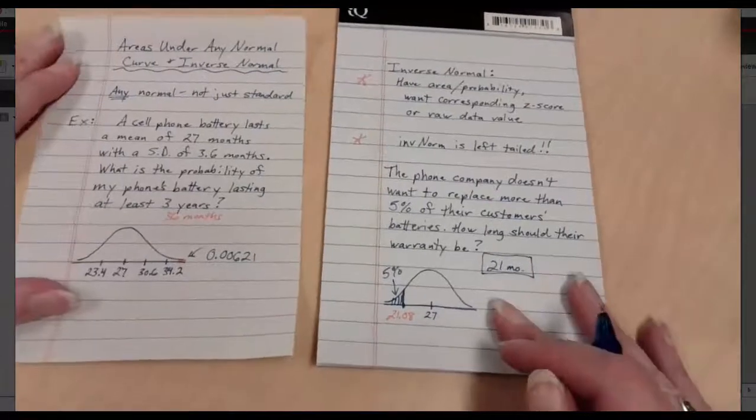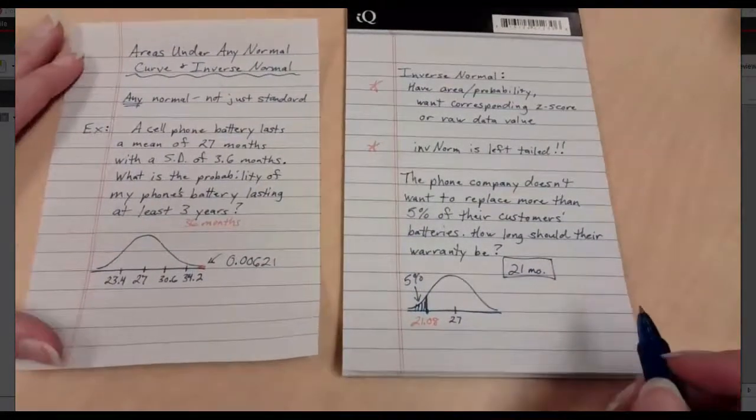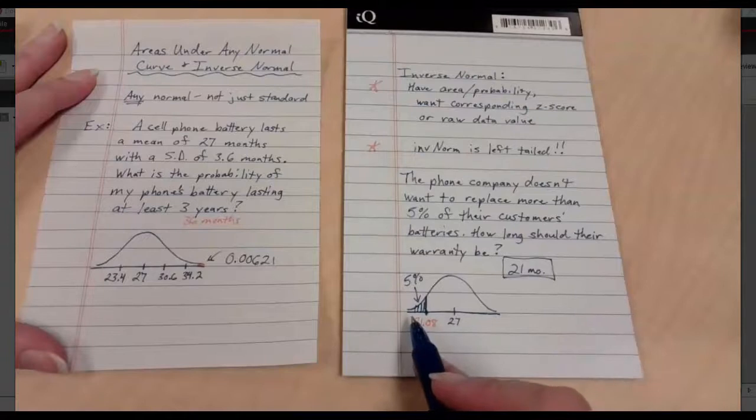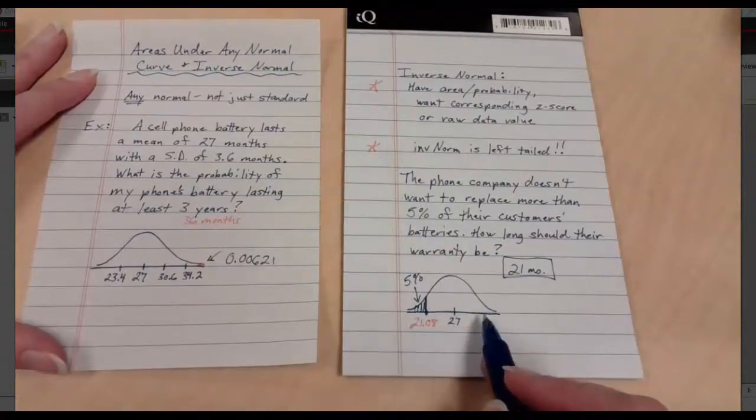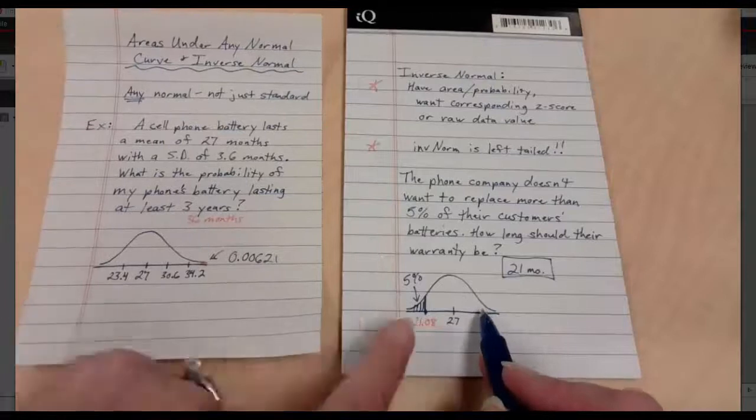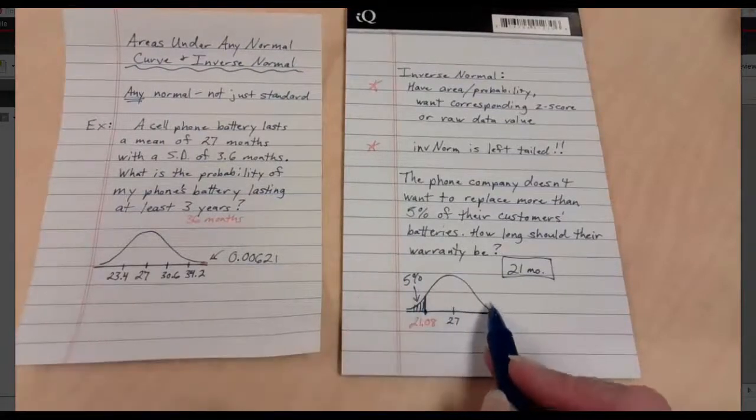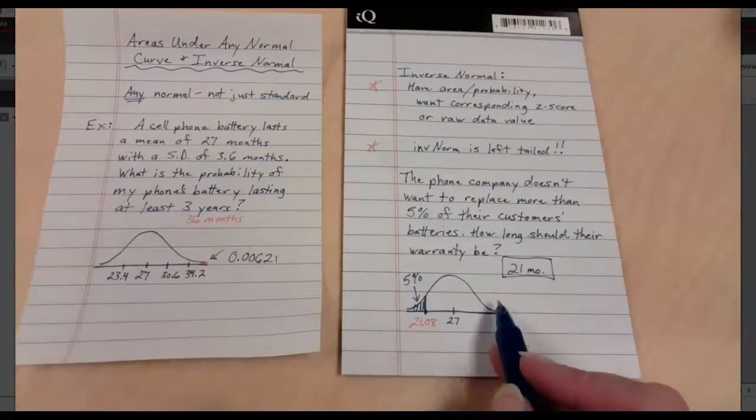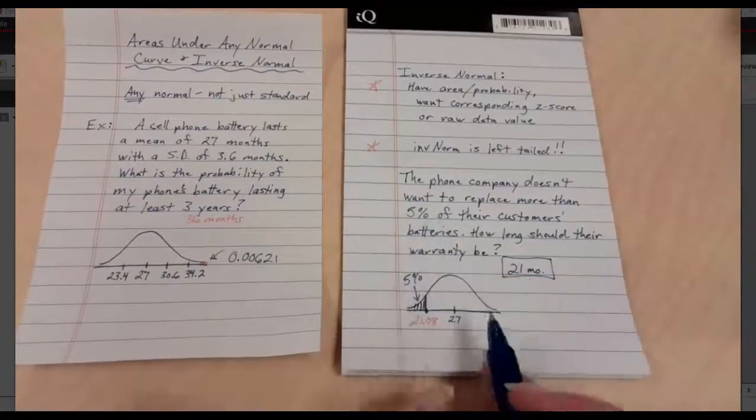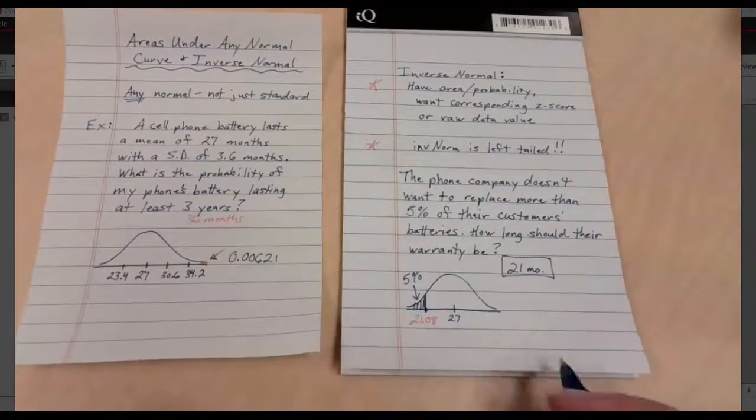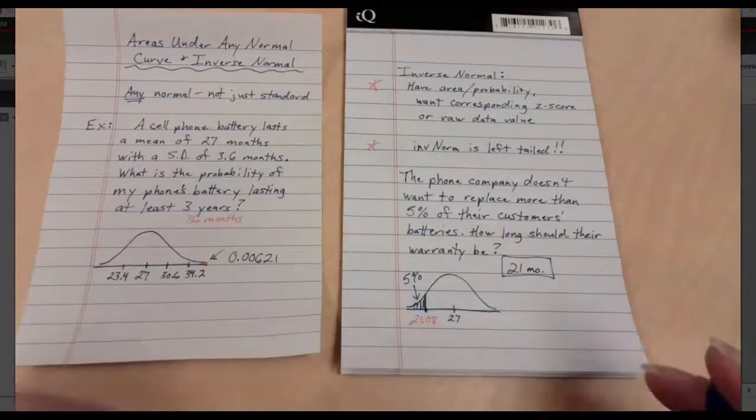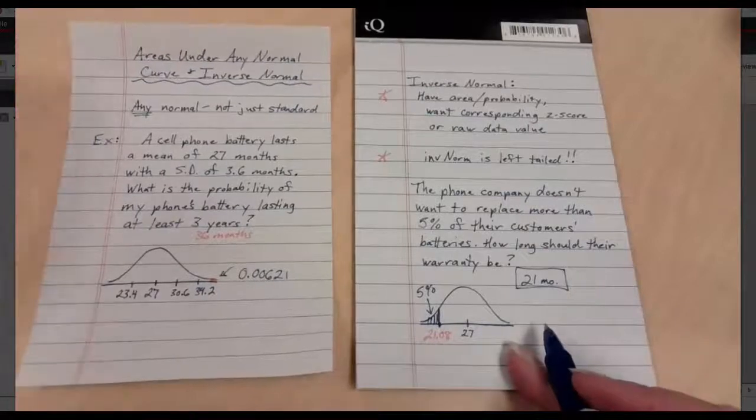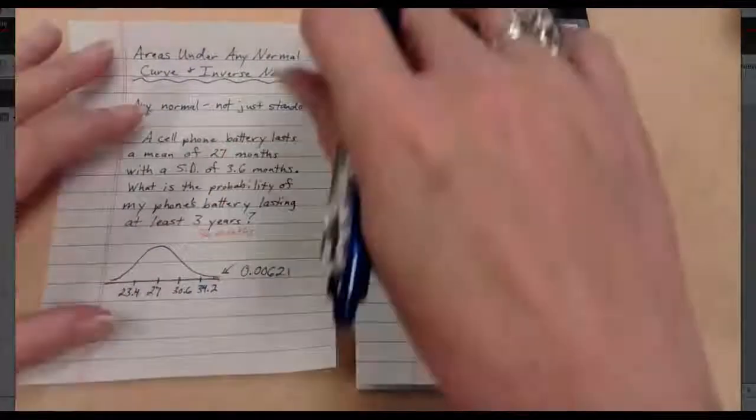I do want to do a real quick thought. What would happen if I wanted the right tail instead? Would I still put 5% in? No. If I want the value at this end, I would want to put in 95% in order to find the marking on my x-axis that'll give me the top 5%. So you're either putting in the area as it exists, or you're putting in the complement of the area if you'd like the right tail instead of the left tail. Things to think about. Don't get turned around here. Make sure that you keep thinking. Always think. Thank you.